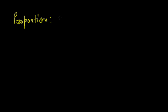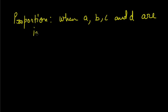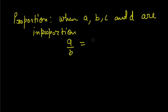When four numbers A, B, C and D are in proportion, then A upon B is equals to C upon D, where A and D are the extreme proportion, B and C are the mean proportion, and D is known as the fourth proportion. Today we will study about continued proportion.